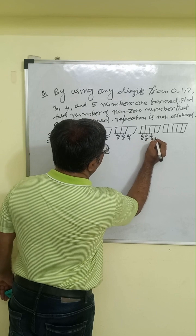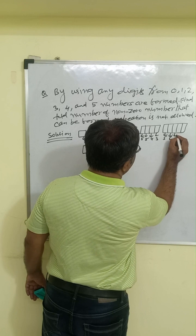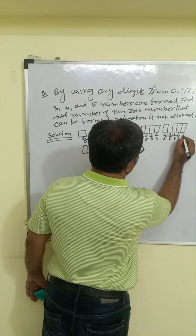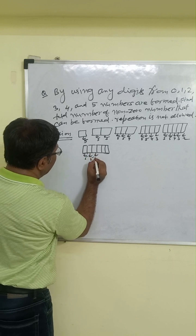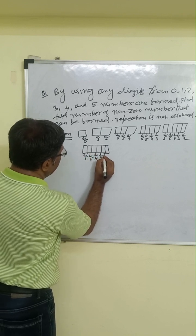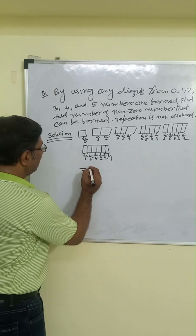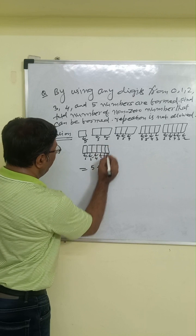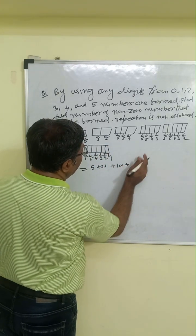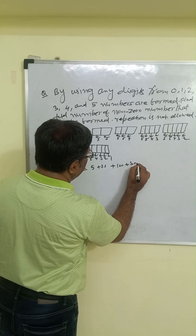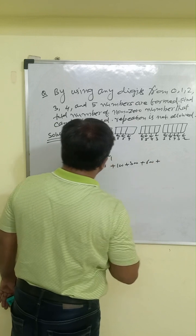For four-digit numbers: 5 ways, 5 ways, 4 ways, 3 ways. For five-digit numbers: 5 ways, 5 ways, 4 ways, 3 ways, 2 ways. For six-digit numbers: 5 ways, 5 ways, 4 ways, 3 ways, 2 ways, and 1 way. So one-digit gives 5, two-digit gives 25, three-digit gives 100, four-digit gives 300, five-digit gives 600, six-digit gives 600.